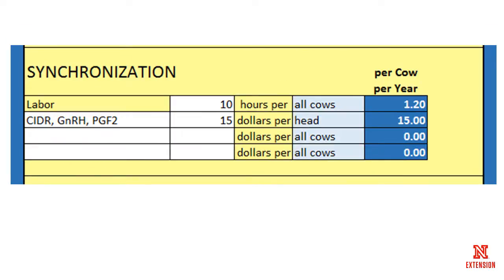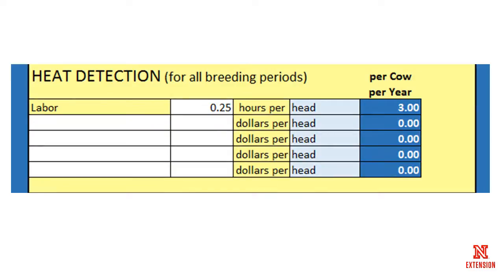The synchronization section allows us to put in the amount of labor related to synchronizing those cows and also the expense of the drugs related to synchronization. For this particular example, I'm assuming we're going to use a Select Sync plus CIDR program, and we're going to spend around $15 for estrus synchronization drugs. The next segment covers heat detection and labor related to that — we're assuming around a quarter of an hour per head, which works out to around $3 per cow based on our labor charge.